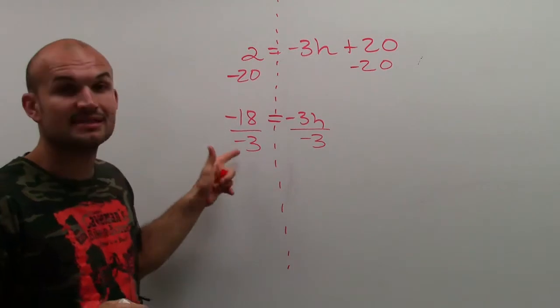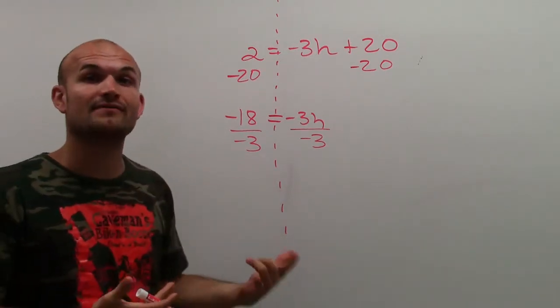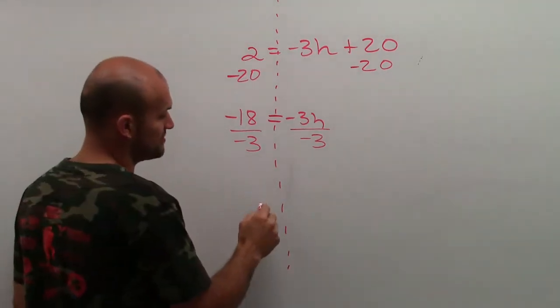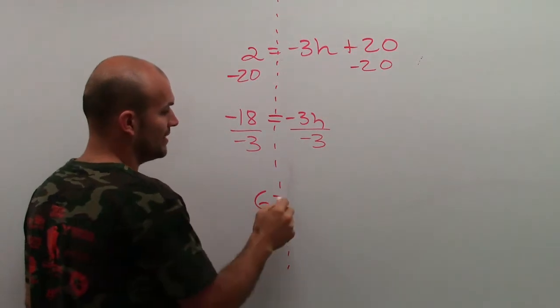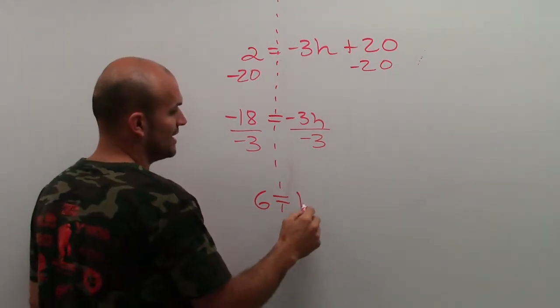Well, then I have negative 18 divided by negative 3. Remember, a negative number divided by a negative number is going to produce a positive number, and that's going to be 6 equals h.